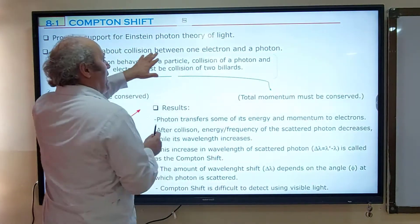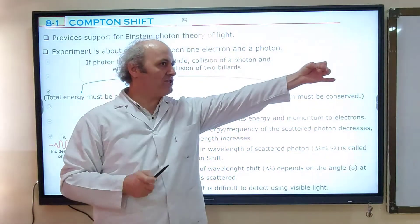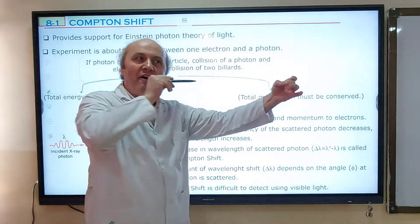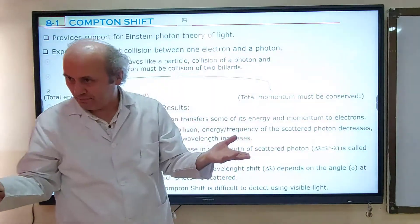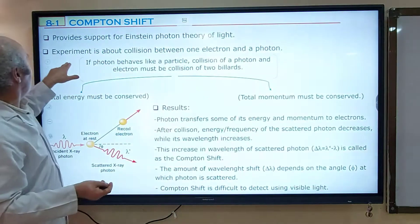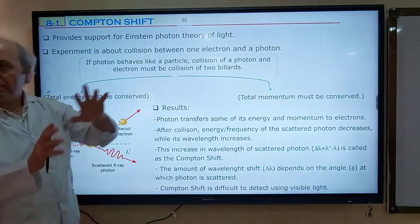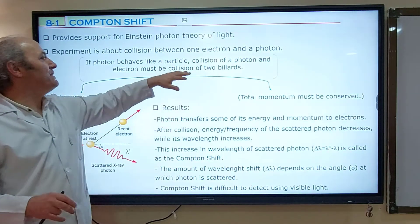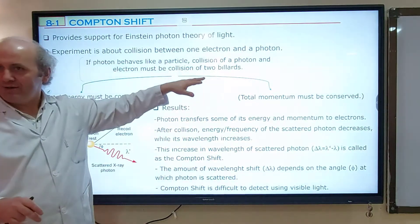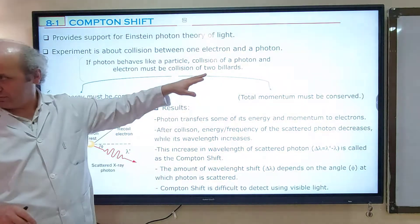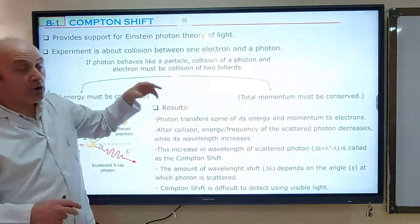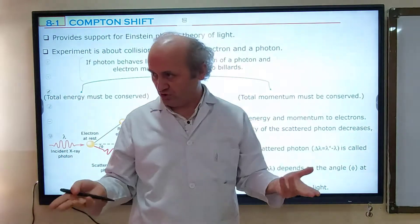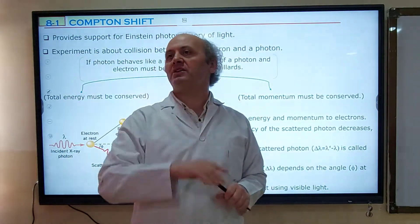There will be an electron at rest. We are going to send a photon, single photon to this electron. After photon collides the electron, what's going to happen? If a photon behaves like a particle, collision of a photon and electron must be similar to collision of two billiard balls. In collision of two billiard balls, which is last year named as elastic collisions, two quantities are conserved.